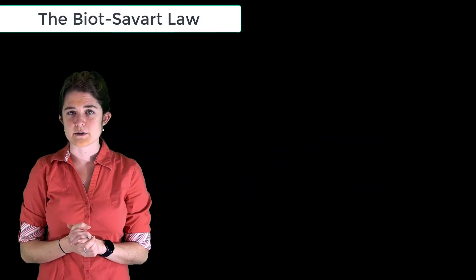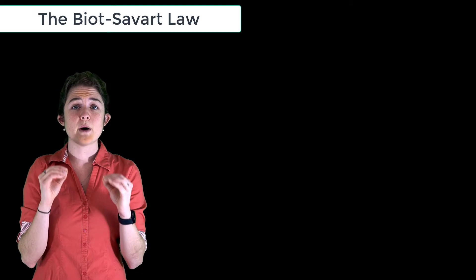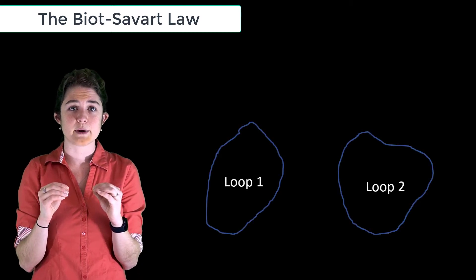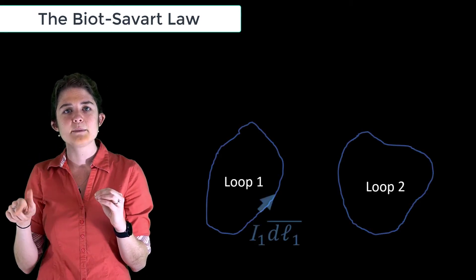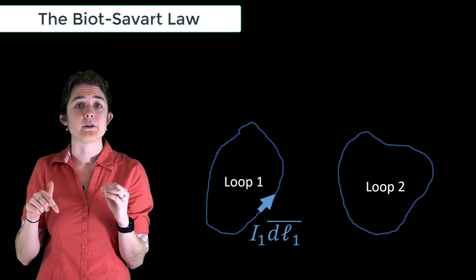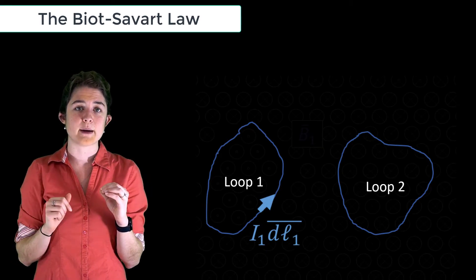Consider the following situation: suppose you had two wire loops in close proximity to one another. If a time-invariant current flows around the first loop, it will generate a magnetic field.